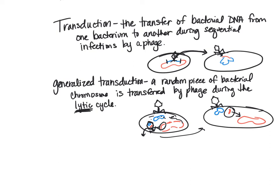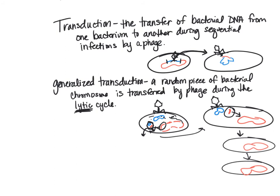As that new bacteria makes copy after copy, it now carries the transferred gene. If that gene was antibiotic resistance, many copies of bacteria now have new resistance to an antibiotic they weren't resistant to before. This is one way so-called superbugs are created — through transduction via bacteriophages moving genes between bacteria. In generalized transduction, it is always a random piece of the bacterial chromosome.